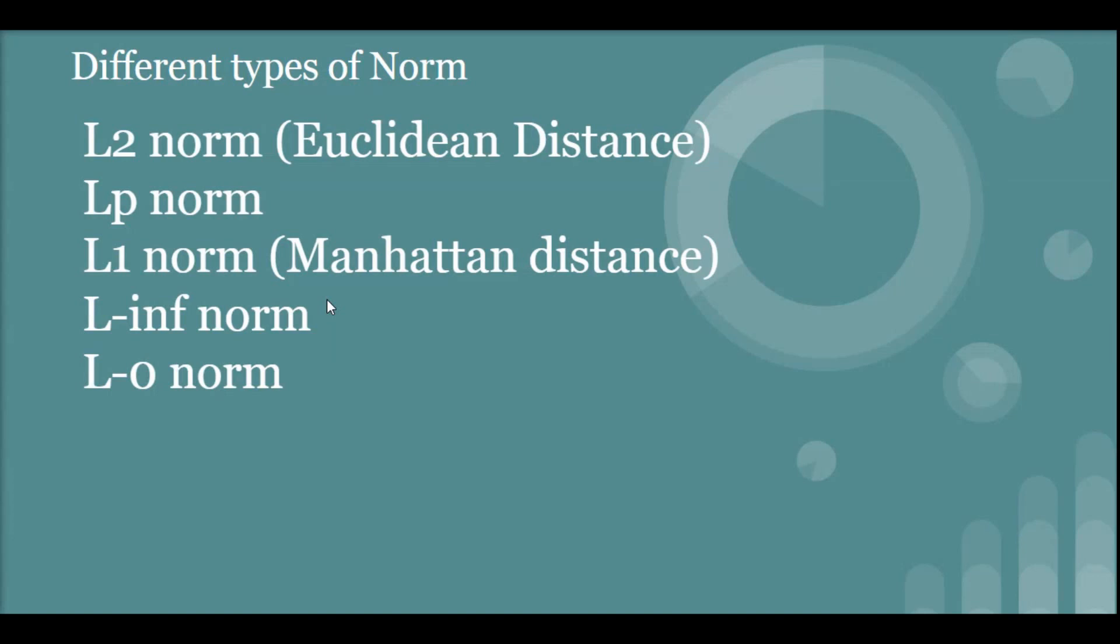All right, great. So now that we know the basic properties of norm, so in our next video we are going to look at the different types of norm. We have the L2 norm, typically we also call it Euclidean distance. Then we have the Lp norm. Then we have the L1 norm, also known as the taxi cab geometry or Manhattan distance. And then we are going to look into the L-infinity norm and the special case of L0 norm.